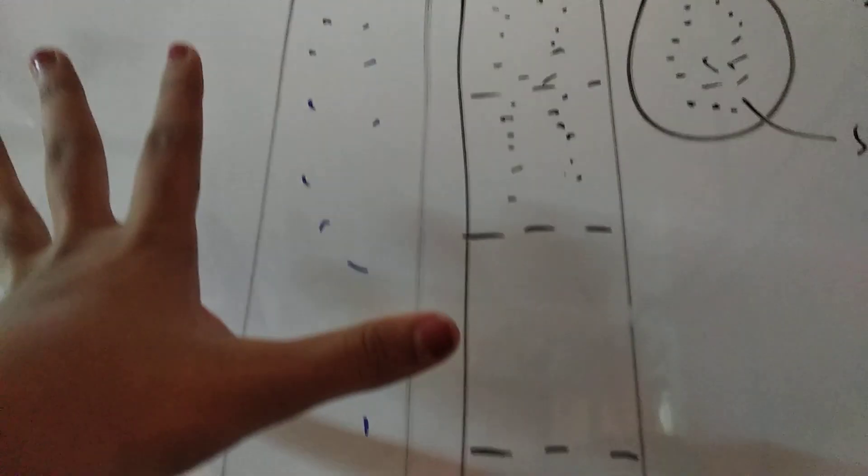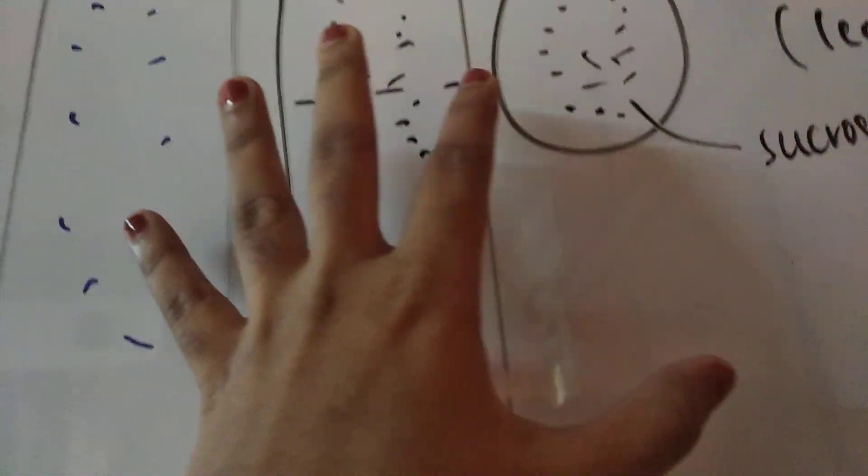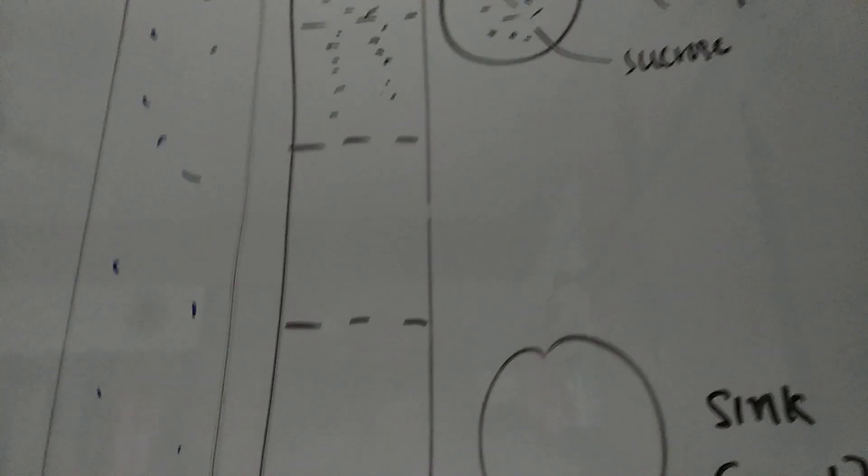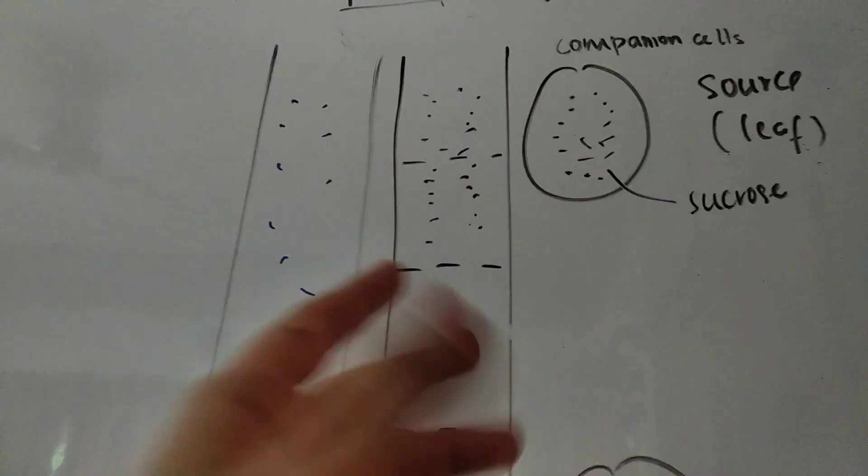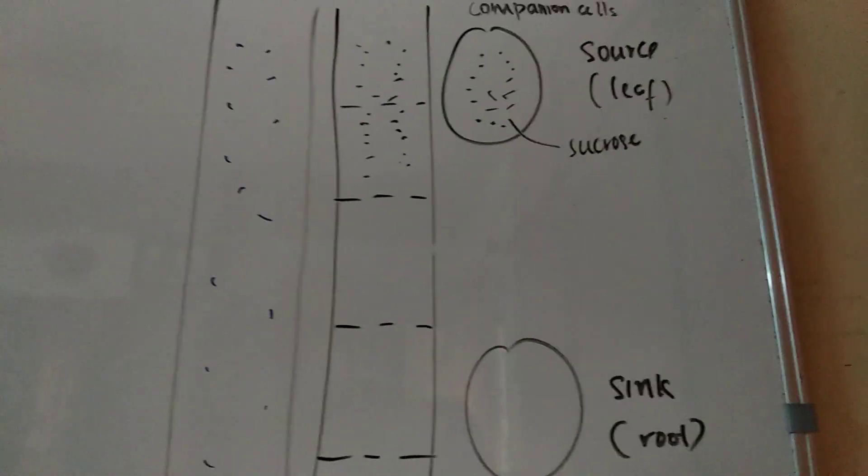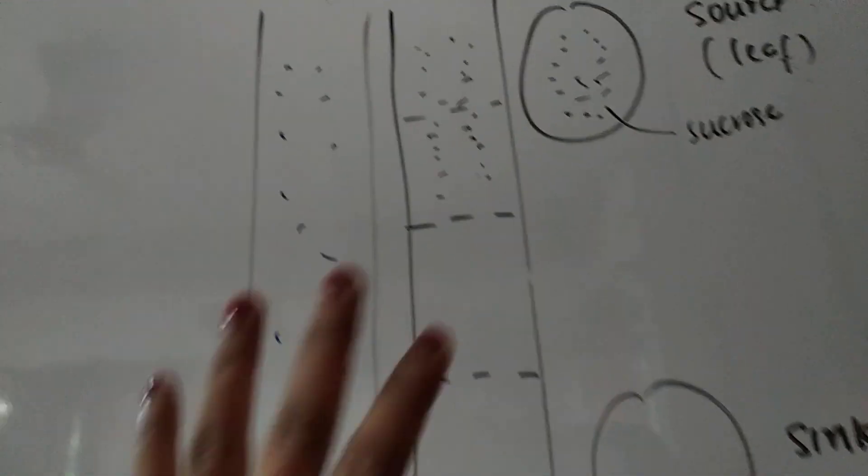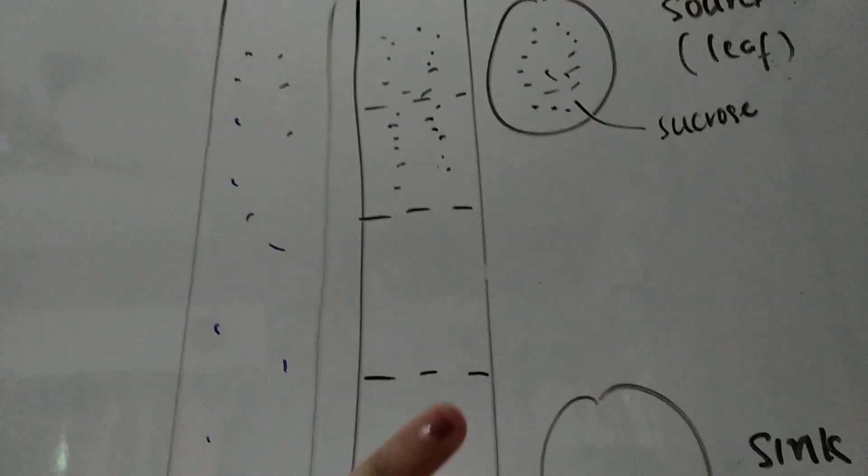But it is not so high as to bring water from the xylem inside of it. It is high but not very high. So maybe it's like isotonic with xylem - I'm not sure about that. I'll just tell you that it's high concentration but not very high.